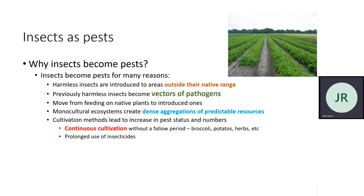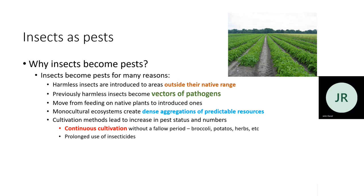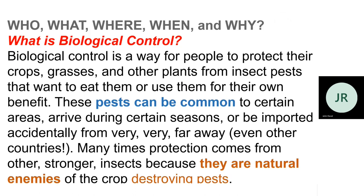Harmless insects introduced to areas outside their native range is one reason they become pests. They can also be vectors of pathogens, which is why they are dangerous. Dense aggregations of predictable resources, continuous cultivation, and sometimes monocultural cultivation — these are also problems. To understand any of these things, we can start with what, why, and how. What is biological control? It is the control of any pest with help of biological means.